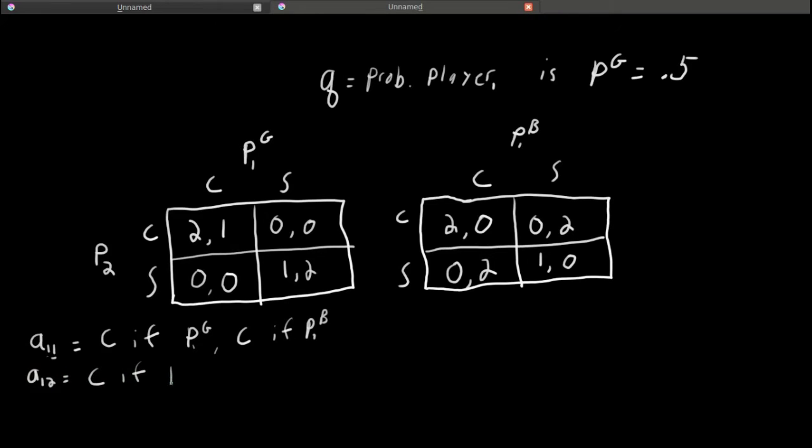So, A12, player 1's second action. This says player 1's second action is to go to the concert if he is the good type, P1G, but go to the sporting event if he is the bad type.